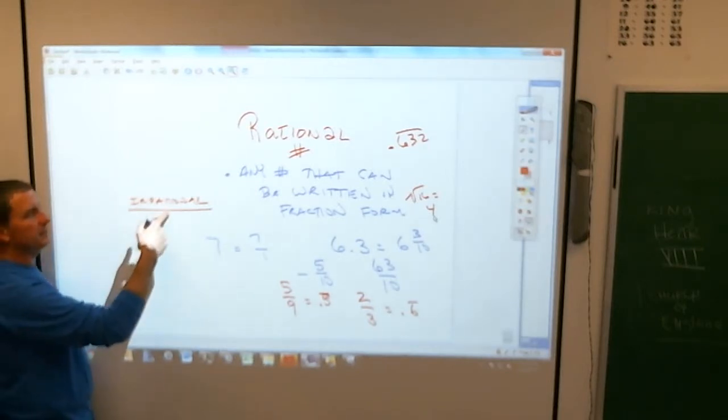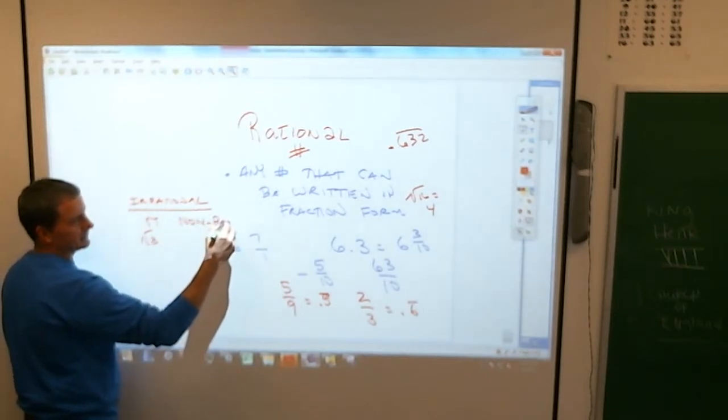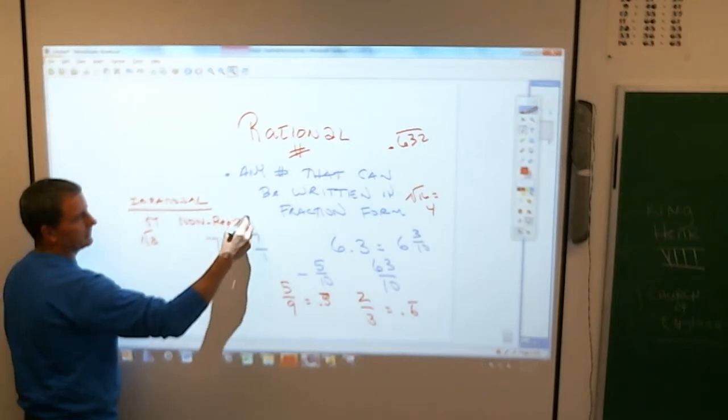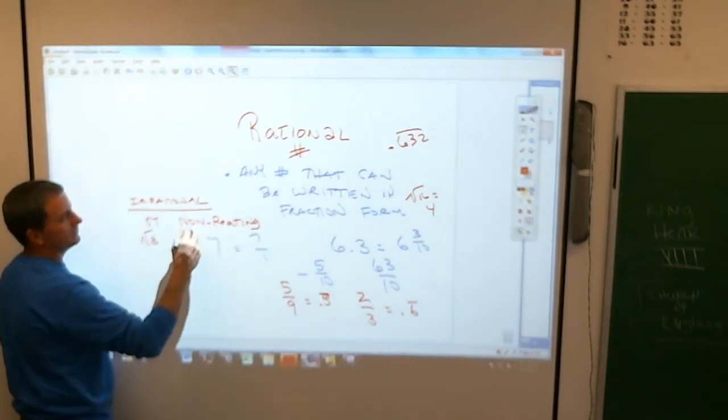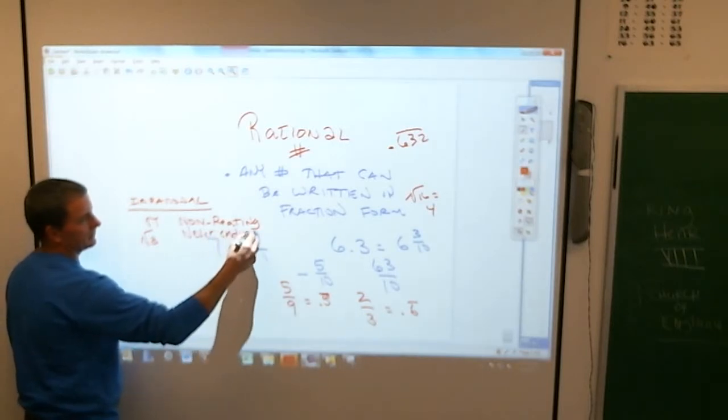Irrational numbers are any numbers that are non-repeating, never-ending decimals.